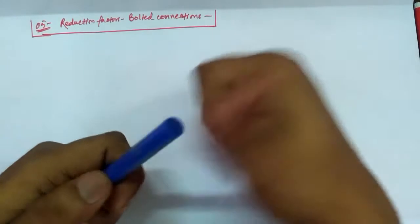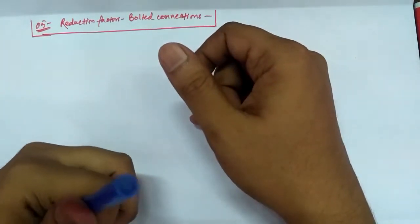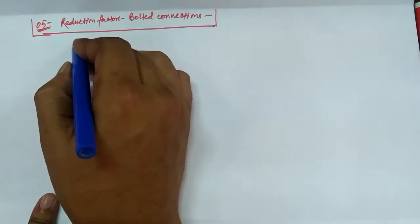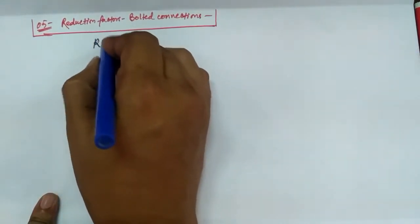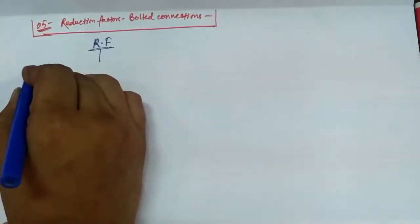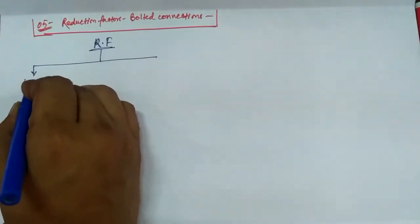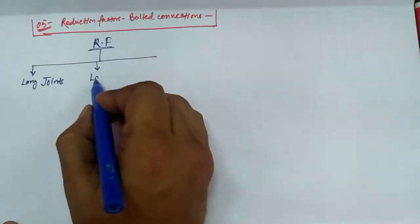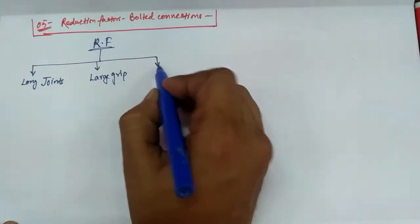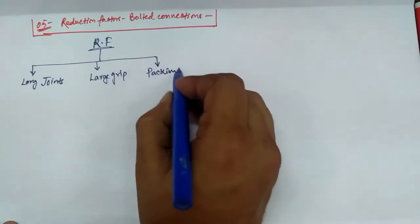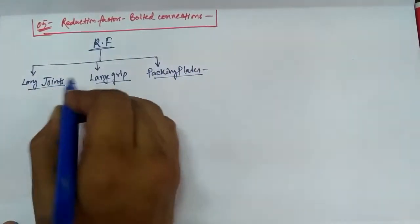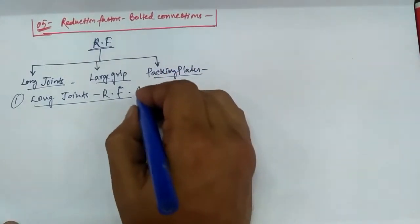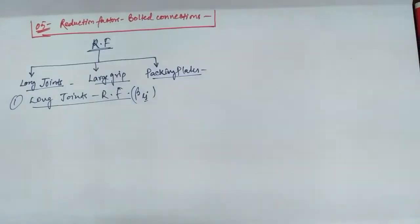We will first discuss the types of reduction factors and then why they are needed. In bolted connections there are three reduction factors. The first one is the reduction factor used for long joints, also denoted as beta LJ, where LJ stands for long joints.